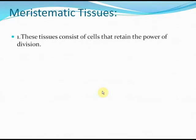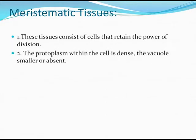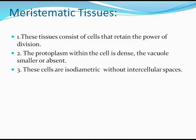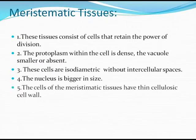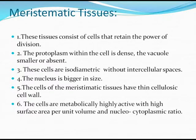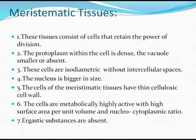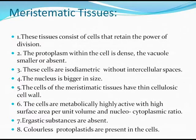Meristematic tissues consist of cells that retain the power of division. The protoplasm within the cell is dense, the vacuole is very small or almost absent. These cells are isodiametric without intercellular spaces. The nucleus is bigger in size. The cells have thin cellulosic cell walls, are metabolically highly active with high surface area per unit volume and nucleo-cytoplasmic ratio. Ergastic substances are absent, and colorless protoplastids are present.